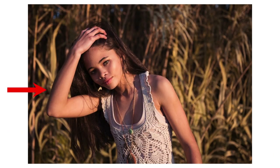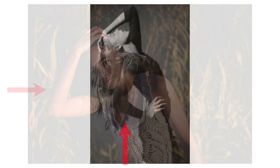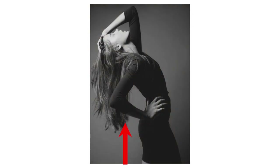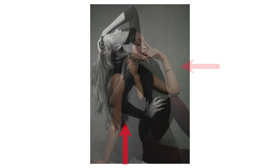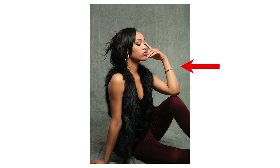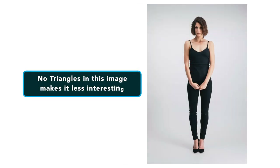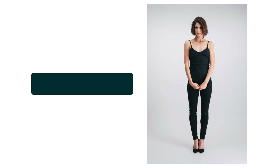What if you're not photographing a group of people, but just one person instead? When the model bends an arm and places her hand on her hip, she creates a triangle. As a result, her pose becomes even more interesting, leading the viewer's eye around the image. If she were simply standing up straight with her arms by her side, the viewer's eye would not have anywhere to go, so it would be less interesting.